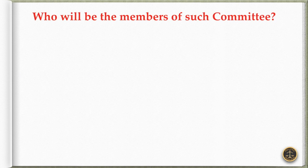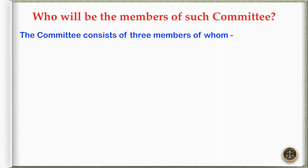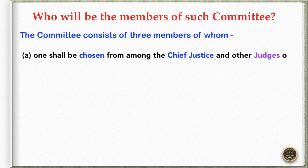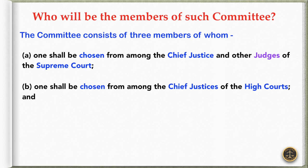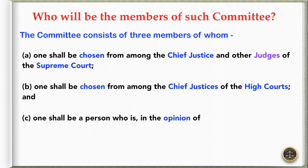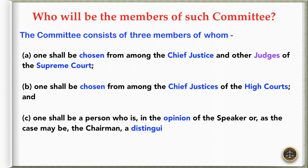For the investigation purpose, the Speaker or Chairman shall constitute a committee of three members: one shall be chosen from among the Chief Justice and other judges of the Supreme Court, one shall be chosen from among the Chief Justices of the High Courts, and one shall be a person who is, in the opinion of the Speaker or Chairman, a distinguished jurist.